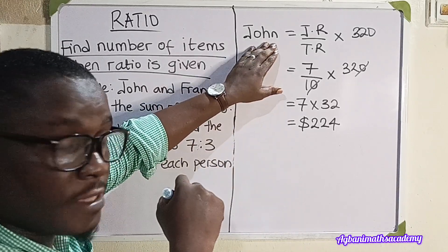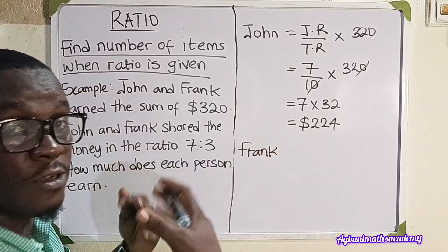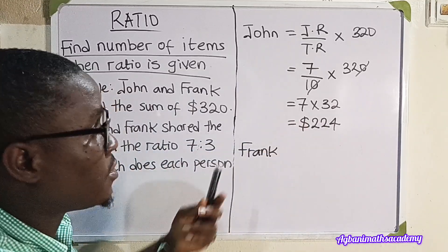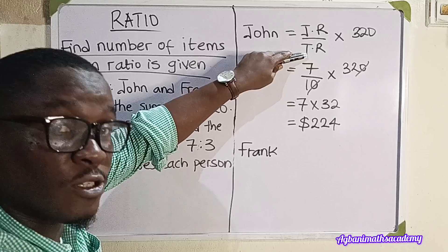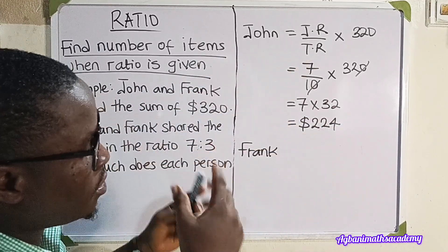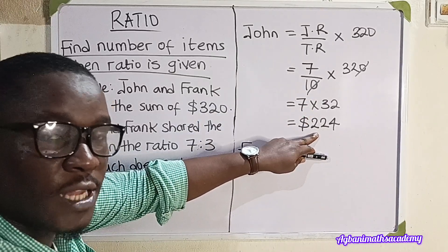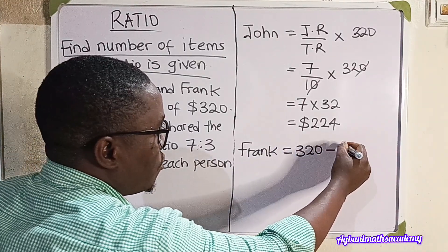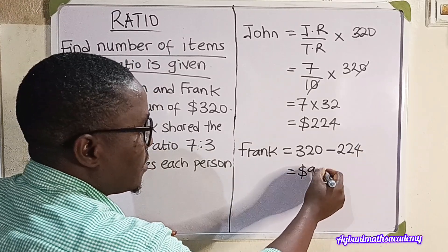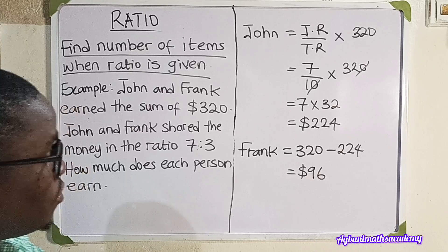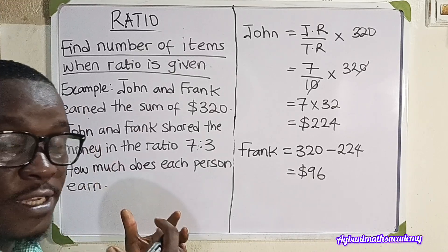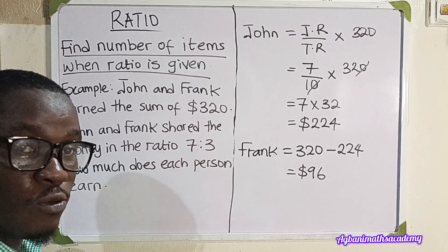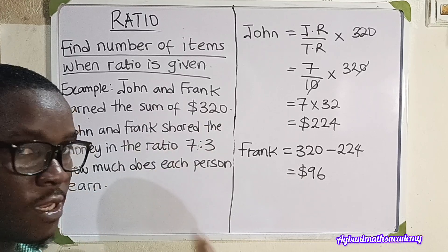Now we know how much John earned. How much did Frank earn? There are two ways. You can use the same process: Frank's ratio divided by the total ratio multiplied by the total sum. Or, since there are only two persons, simply do the total sum minus John's amount: $320 minus $224 equals $96. Frank earned $96. Whenever you are given the ratio and need to calculate the number of items, divide the individual ratio by the total ratio and multiply by the total amount.